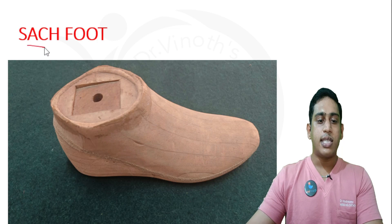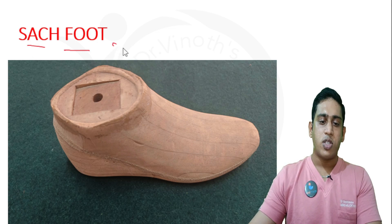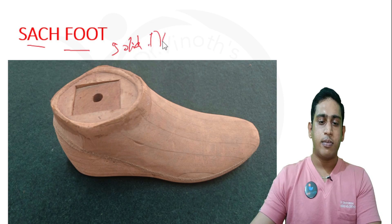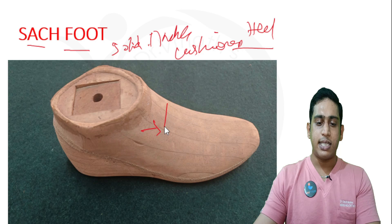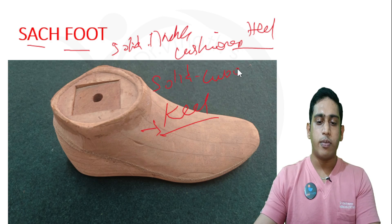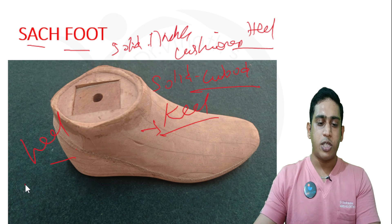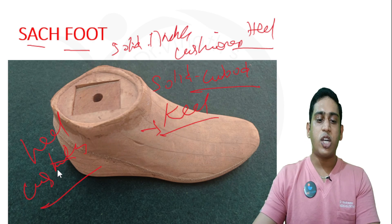Coming to the first prosthesis, that is called the SACH foot, or locally called SAC foot, which stands for Solid Ankle Cushioned Heel. The ankle region is made up of a solid material, which is wood. The heel part is made up of a cushioned material. Hence the name: solid ankle, which is a keel with a cushioned heel.